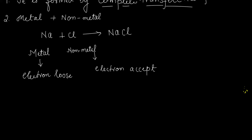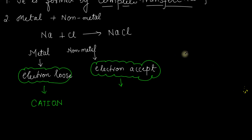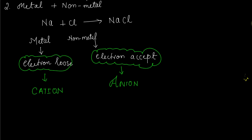When metal loses electrons, it will become a cation. When metal loses one electron, it will become a cation. If any atom loses electrons — if I am talking about any atom and it loses electrons — it becomes a cation. Whatever condition applies, if it is a metal and it does electron lose, it becomes a cation. This is the basic concept to understand.